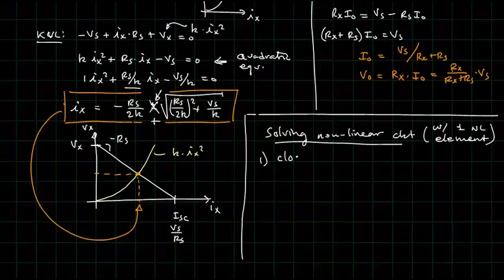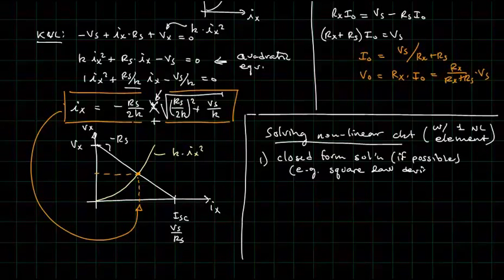One. Closed form solution, if possible. We just looked at one. For example, square law device. So, this is the exception. Most circuits will not, or nonlinear elements will not allow this.